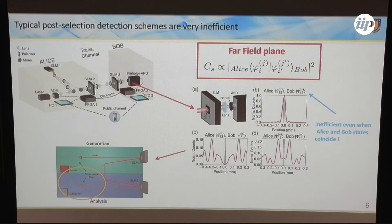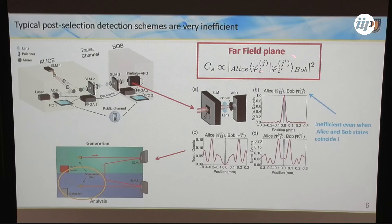Typically, experiments with this type of qudits have Alice using up to two spatial light modulators to prepare the state. Then Bob has a spatial light modulator which post-selects the state to be detected, and he needs a filtering process to conclude the projection with detection at the avalanche photodetector. The problem is that the probability for single photon detection is very low — it's proportional to the overlap between the prepared and measured post-selected state, and usually this constant is very small. So the scheme is inefficient.